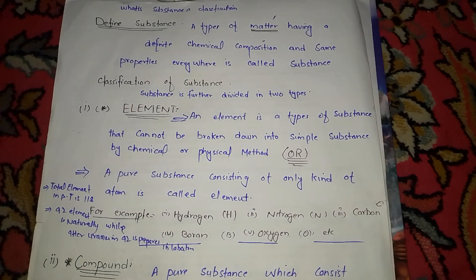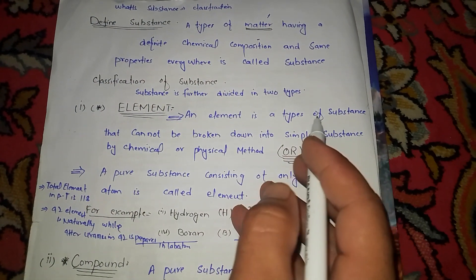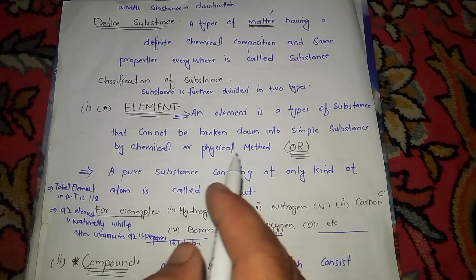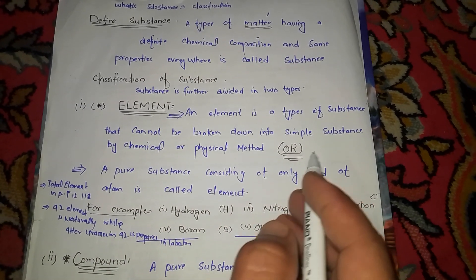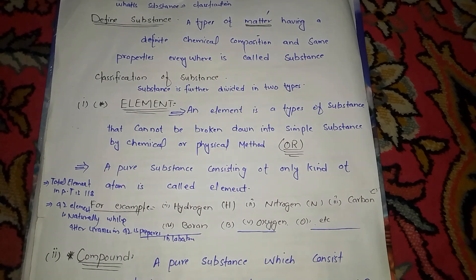What is element? Element is a type of substance that cannot be broken down into simpler substances by chemical or physical methods.